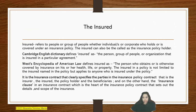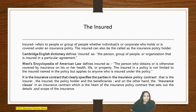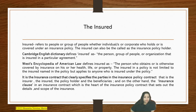Next is the insured. Who is the insured? Insured refers to people or a group of people, individuals, or a corporate who holds or is covered under an insurance policy — also called the insurance policy holder. Cambridge English Dictionary defines insured as a person, group of people, or organization that is insured in a particular agreement. West's Encyclopedia of American Law defines insured as the person who obtains or is otherwise covered by insurance on his or her health, life, or property. The insured in a policy is not limited to the insured name in the policy, but applies to anyone who is insured under the policy.